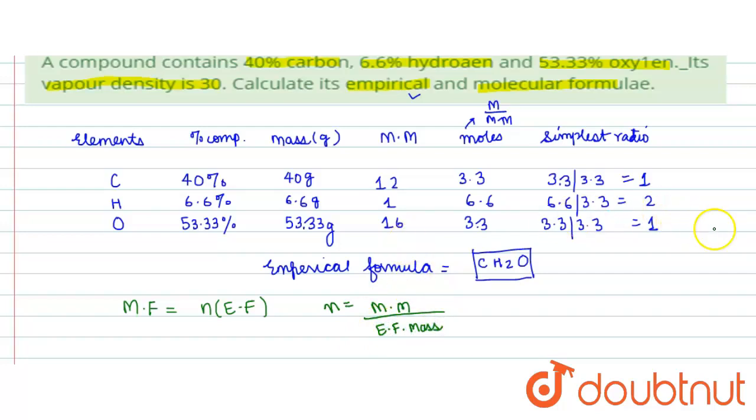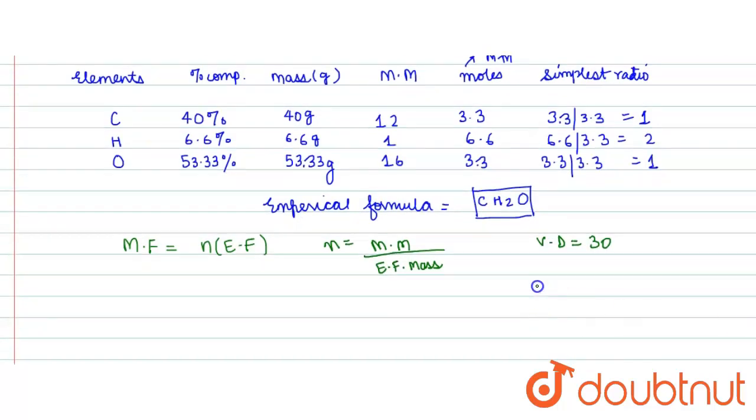So in the question, neither we know the value of n nor we know the molar mass of the compound. We just know the vapor density, which is equals to 30. So to calculate the molar mass, generally molar mass is equals to vapor density into 2, which is 30 into 2. Hence the molar mass of the compound is 60.